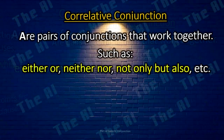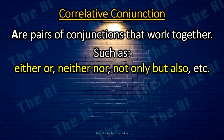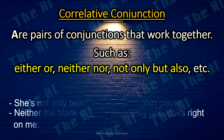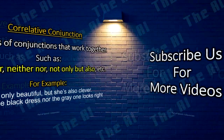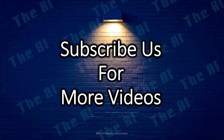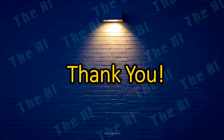Correlative conjunctions are pairs of conjunctions that work together, such as either/or, neither/nor, not only/but also, etc. For example: She's not only beautiful, but she's also clever. Neither the black dress nor the grey one looks right on me. Now we've finished our topic about conjunctions. If you have any questions, please leave your comments in the comments section below. Thanks.